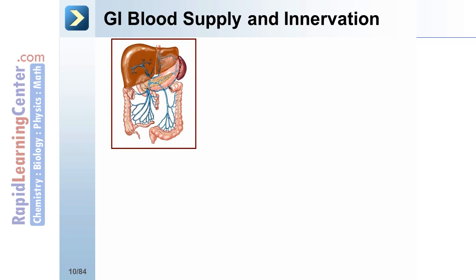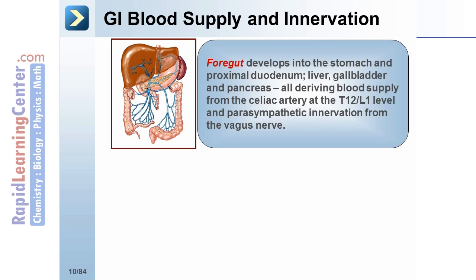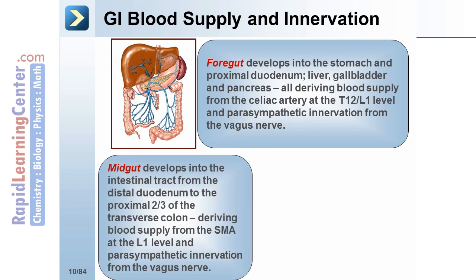Embryologically, the organs of the GI tract develop from the primitive gut as follows. The foregut develops into the stomach and proximal duodenum, liver, gallbladder, and pancreas. All derive blood supply from the celiac artery at the T12-L1 level and parasympathetic innervation from the vagus nerve.